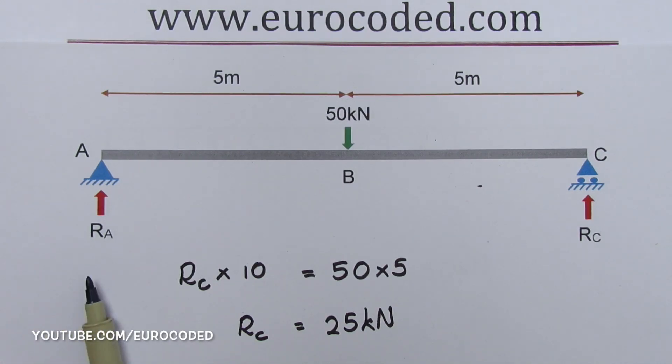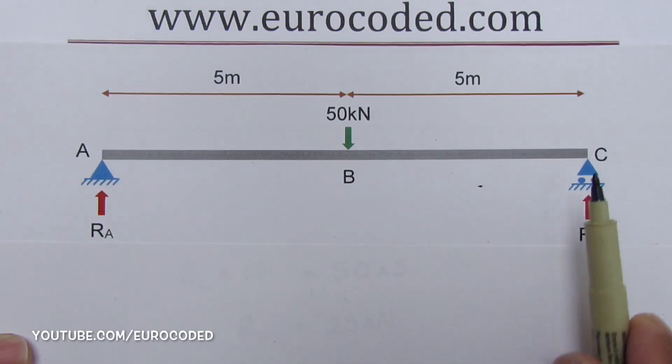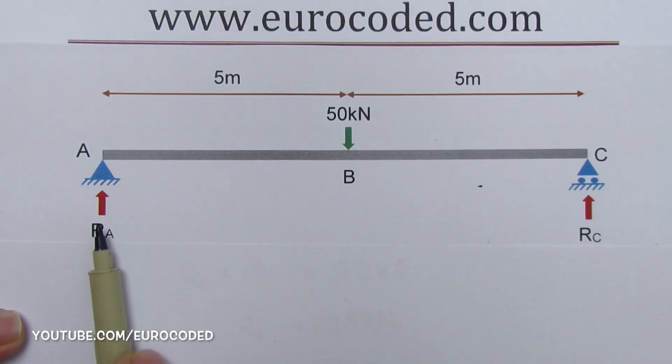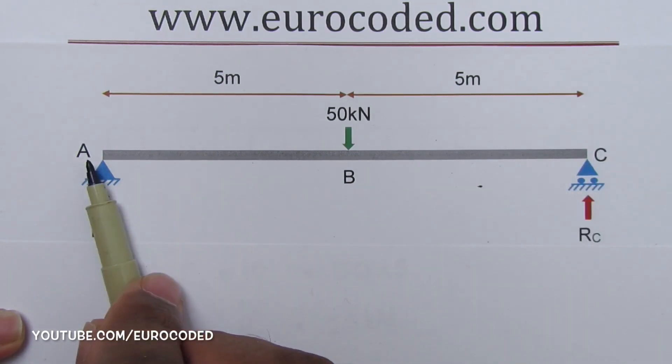But let's carry on with our calculations and prove this. Now we can take moments about C. Just like before, the lever arm is 0 for RC when we are taking moments about C. Therefore, RC results in 0 moments about point C. We have a clockwise moment due to RA and the lever arm is 10 meters.